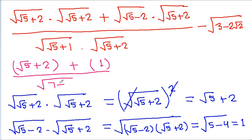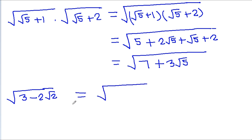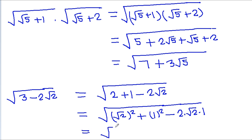So it is a square root of (7 minus 3 root 5), minus a square root of (3 minus 2 root 2). Now, square root of (3 minus 2 root 2): 3 is 2 plus 1, and this is square root of (root 2 squared plus 1 squared minus 2 times root 2 times 1), which is square root of (root 2 minus 1) squared, equal to root 2 minus 1.